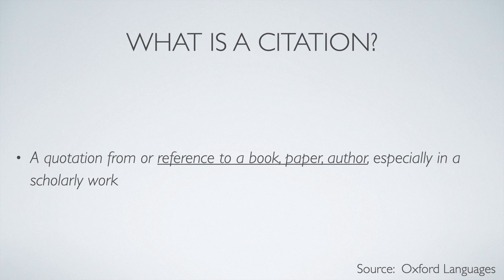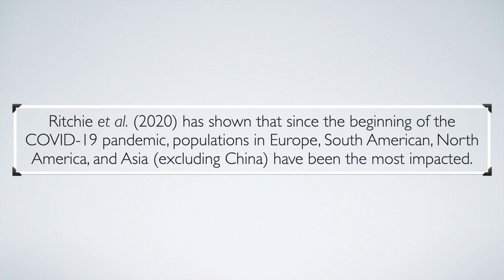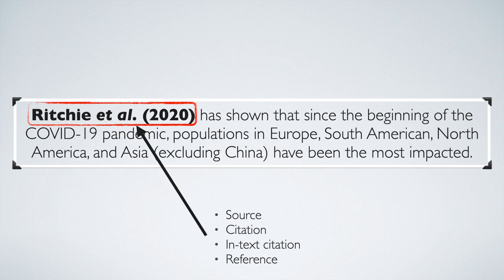This is a typical sentence you can see when reading the literature. At the beginning of the sentence we can see an author's name and year. This is referred to as the source of the information that follows. It is also known as a citation or an in-text citation or a reference. From now I'll mostly refer to it as an in-text citation.